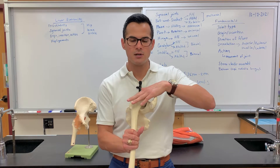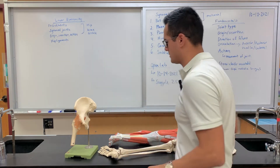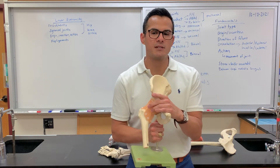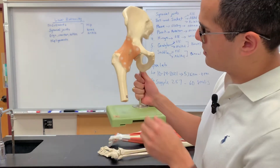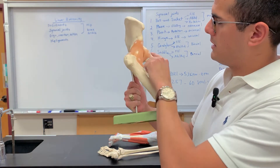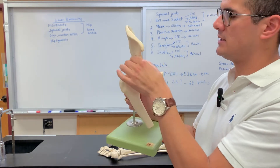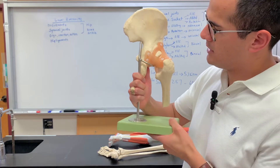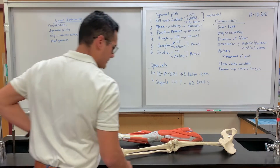Let me go over the ligaments of the hip. The names of the ligaments are simply based on the region where they're located. The pubofemoral ligament goes from the pubic region to the femur. The iliofemoral ligament is where the ilium of the pelvis is. On the back side is the ischiofemoral ligament, because that is where the ischium is — remember the ischial tuberosity is right there.